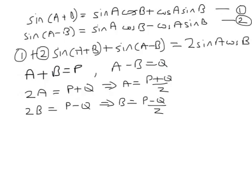Let's put all these back into this equation here. So it's sine of A plus B, that's sine P, plus sine of A minus B. A minus B is Q.